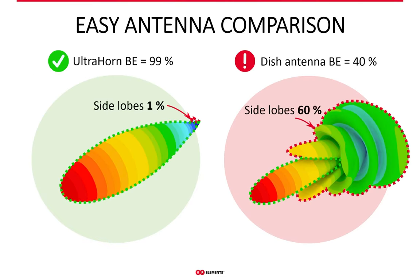If you want to compare two antennas in terms of side lobe performance, beam efficiency makes it extremely simple — the higher number wins. In this example, the ultra horn on the left has beam efficiency of 99%, only 1% short of perfection. A generic dish antenna has beam efficiency of 40%, so the remaining 60% of the energy it radiates is in the side lobes. 99% is clearly more than 40%, and that's why the ultra horn is a way better antenna in terms of noise suppression — in our opinion, the best on the market.